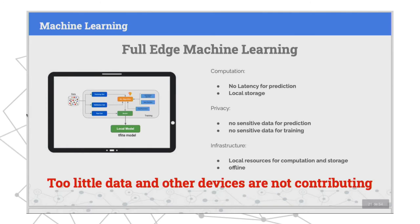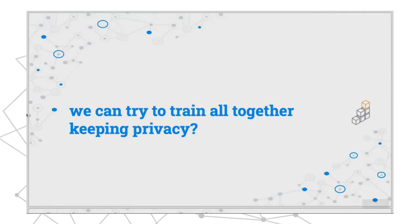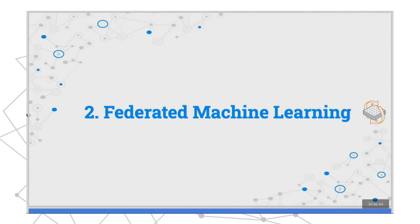We don't have enough information on a single device to generate a really good model, and we have no information from other devices. The solution is good for privacy, computation, and infrastructure, but it's not good for the real goal of machine learning because we are not going to generate a high-quality model. So how can we train all devices together — using all the information they generate — while keeping privacy?